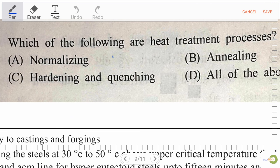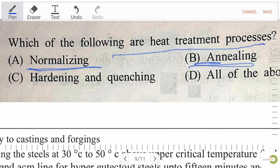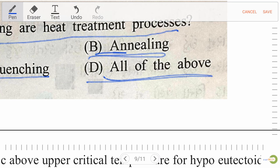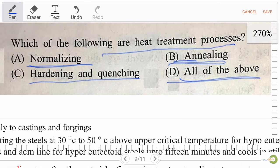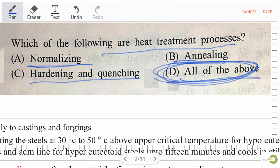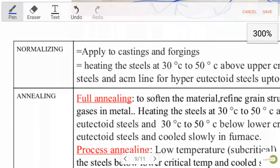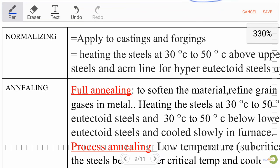Next question: which of the following are heat treatment processes? Option A: normalizing, Option B: annealing, Option C: hardening and quenching, Option D: all of the above. The right answer is D, all of the above — annealing, normalizing, hardening, and quenching (quenching is part of hardening) are all heat treatment processes.